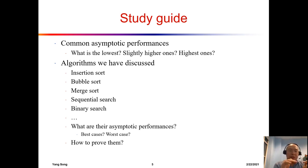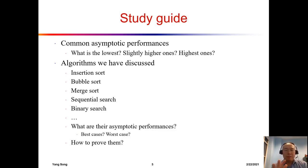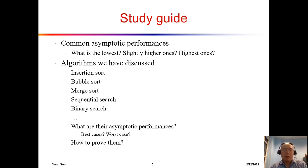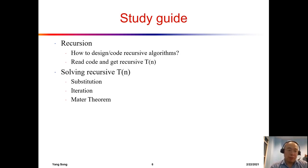For those algorithms, you should know their asymptotic performances. For some, you need to distinguish best case from worst case — for example, what are the best-case and worst-case time complexities of quicksort, and how do we prove them?